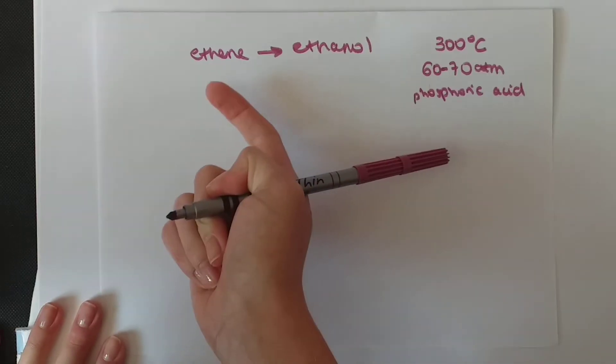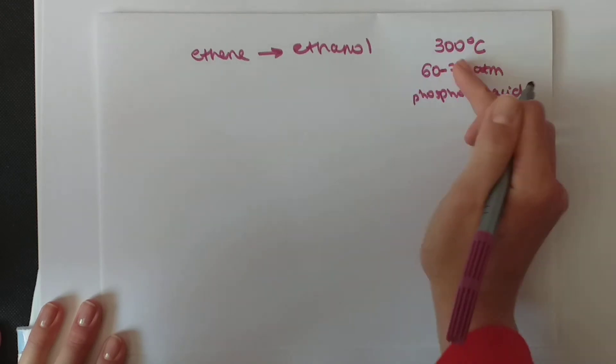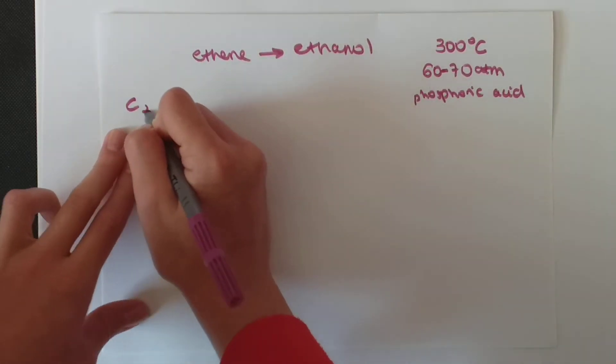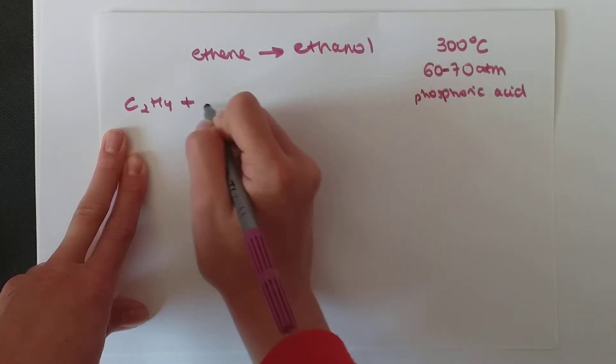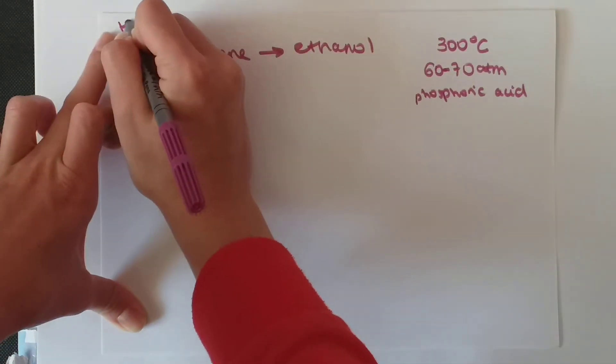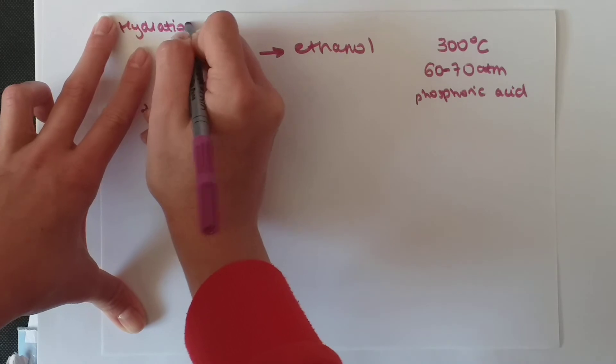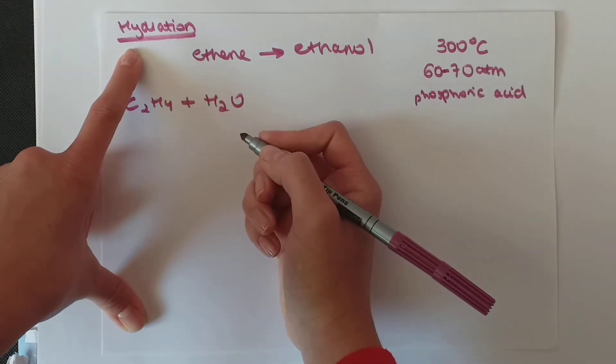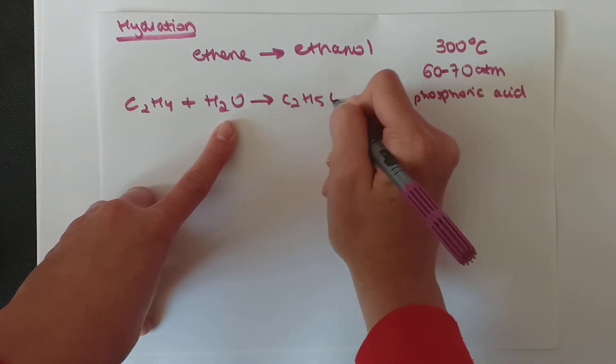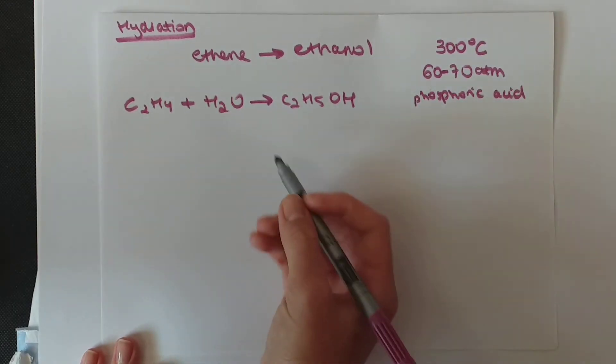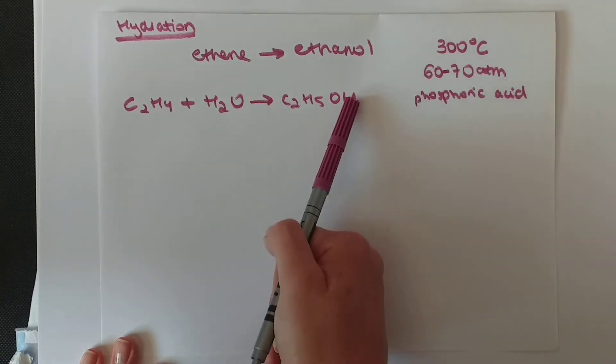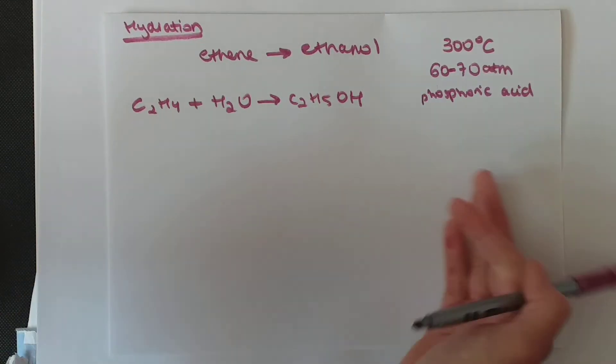So you can make ethanol from ethene if you have these conditions and this catalyst. The equation for this is C2H4, our ethene. We add water. This is called a hydration reaction and from the name you can see that you're going to add water and you make an alcohol. So when you added water you hydrated ethene to make an alcohol. And this is the whole equation.